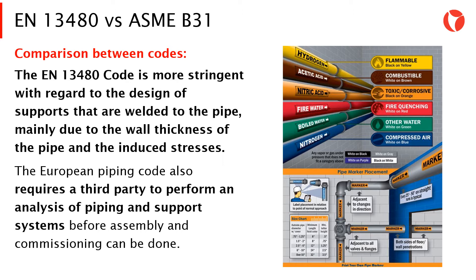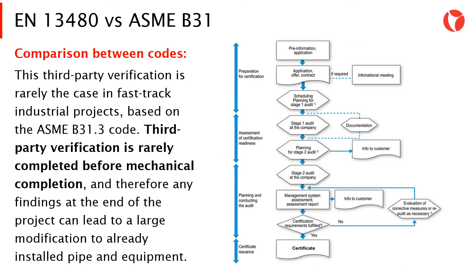The European piping code also requires a third party to perform an analysis of piping and support systems before assembly and commissioning can be done. This third party verification is rarely the case in fast track industrial projects based on the ASME B31.3 code. Third party verification is rarely completed before mechanical completion, and therefore any findings at the end of the project can lead to large modifications to already installed pipe and equipment.